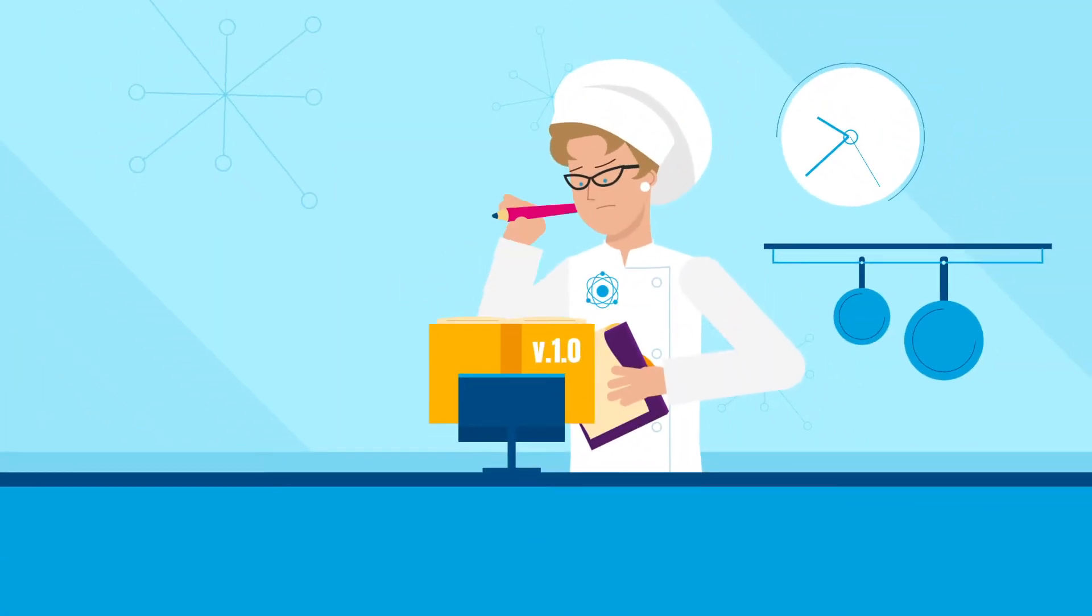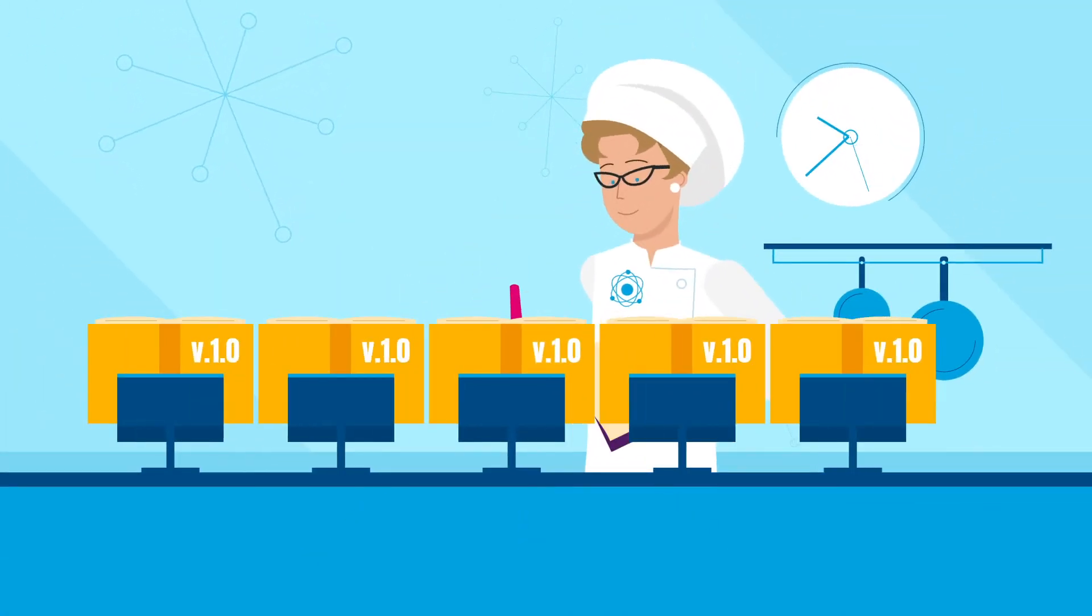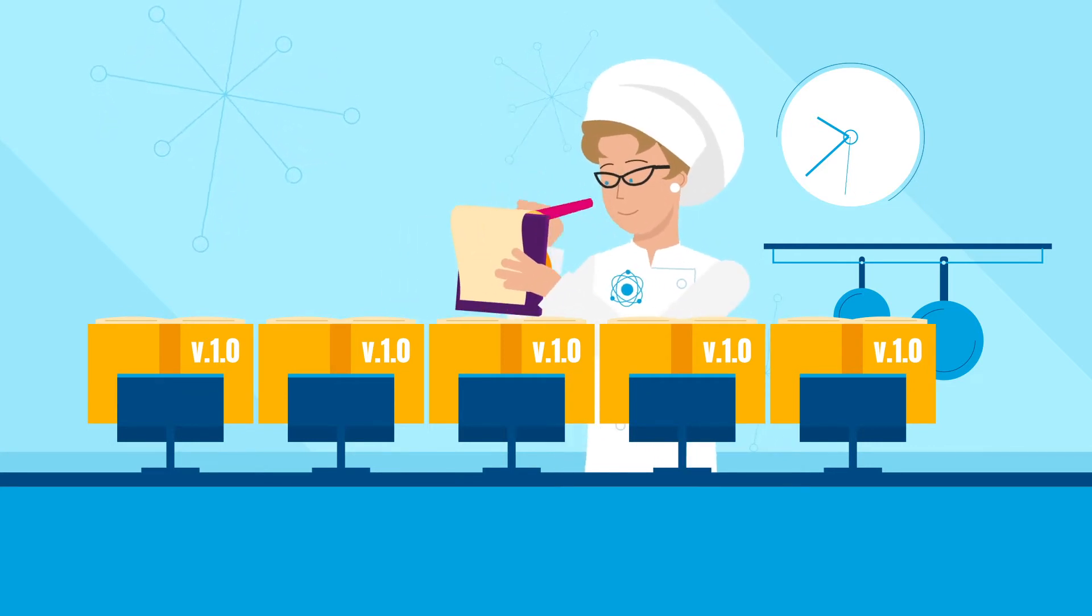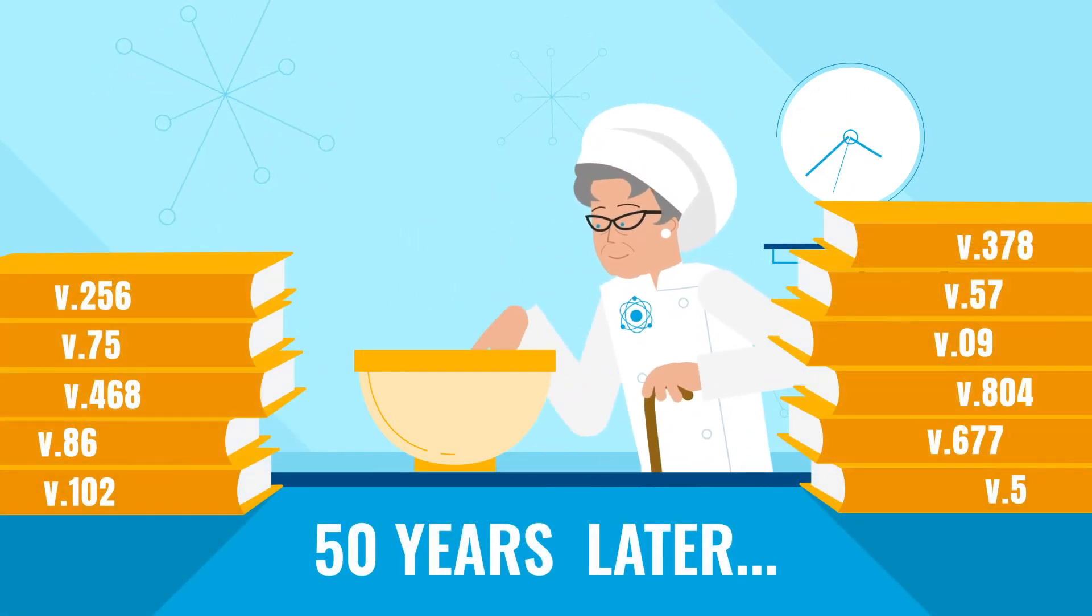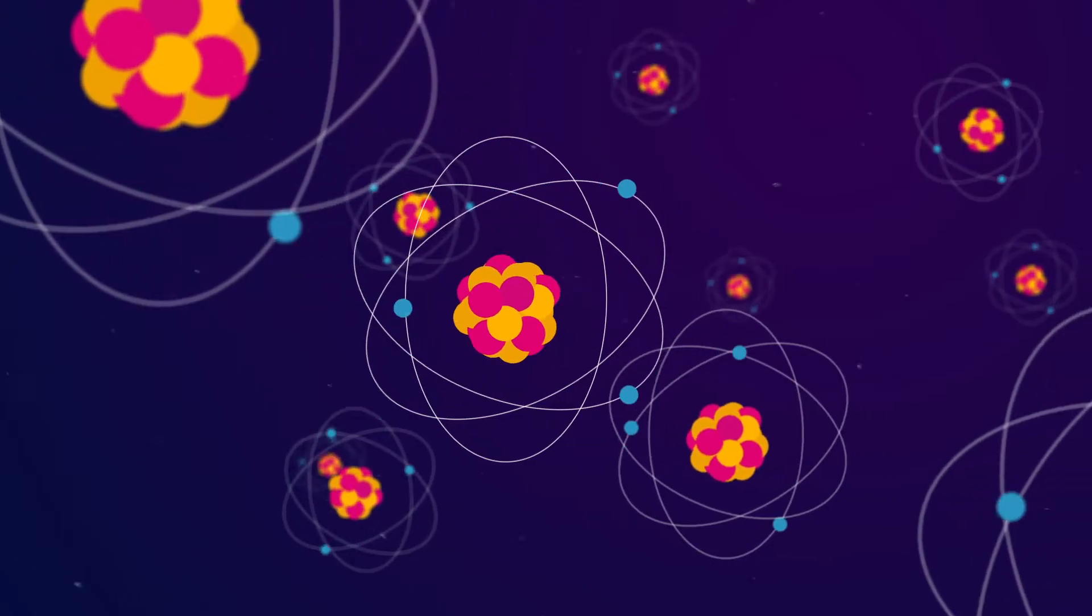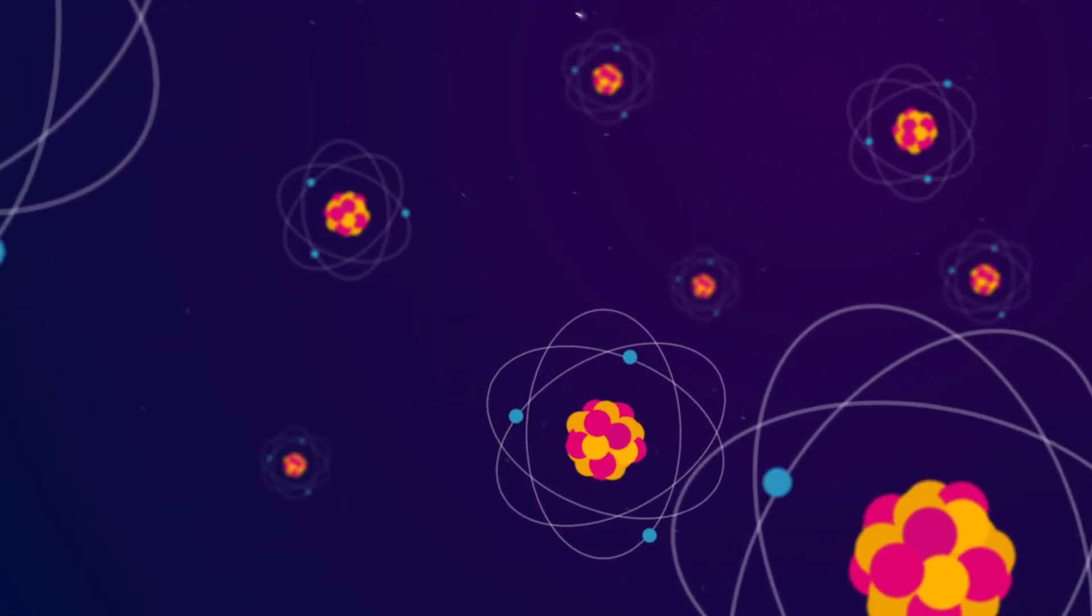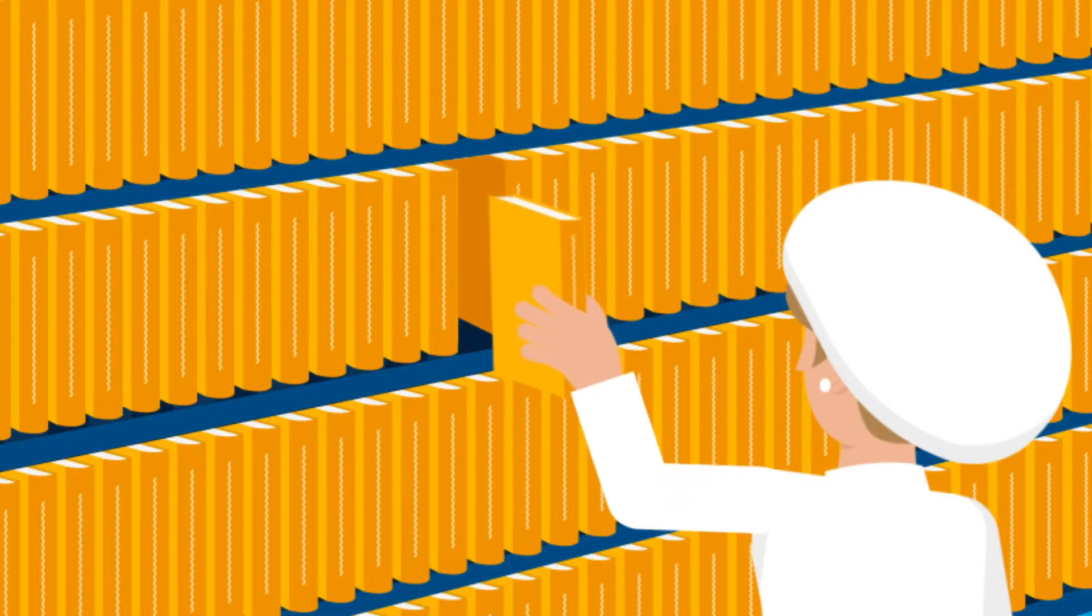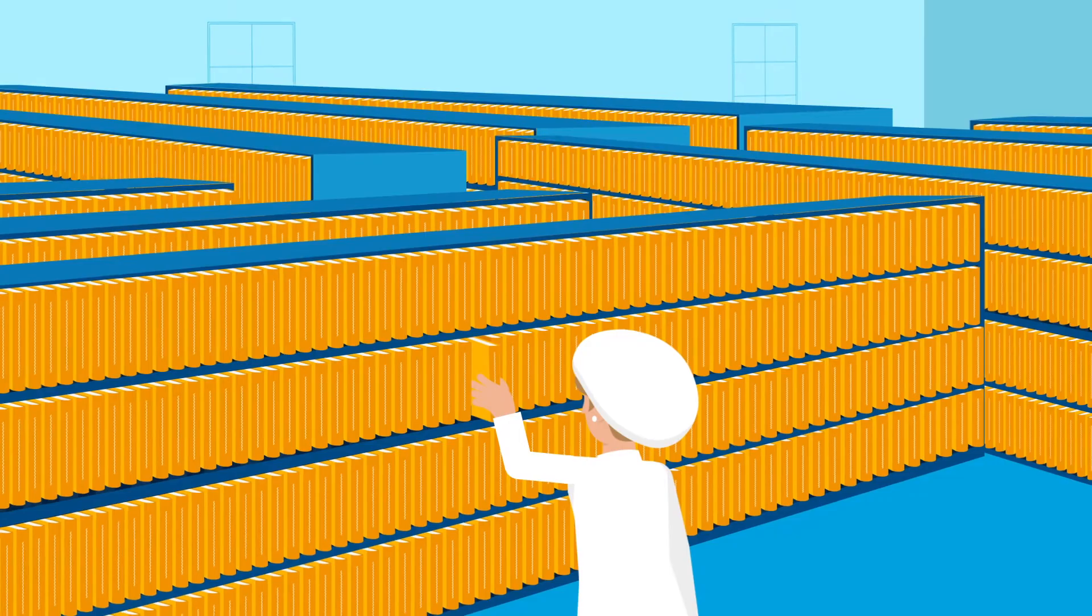From recipe version 1.0, when we first used atom-splitting, neutron-releasing physics to reach criticality and create power, to today, when we're continuing to perfect the recipe and make the process more efficient, measuring thousands of reactions, observing how neutrons behave in new conditions. The results added to our evaluation process to improve our reference library.